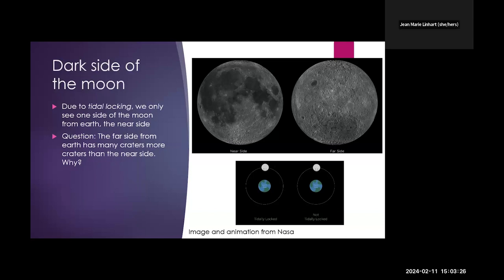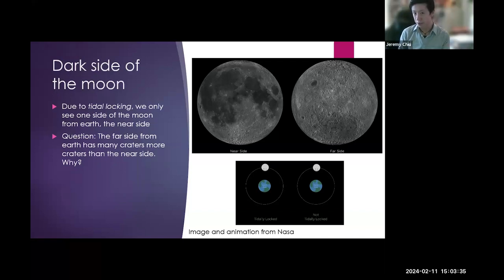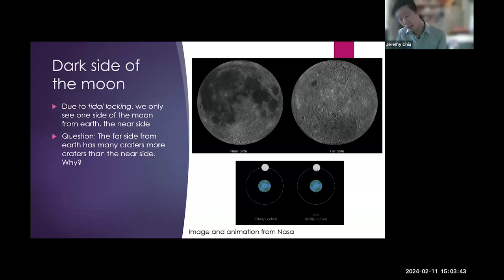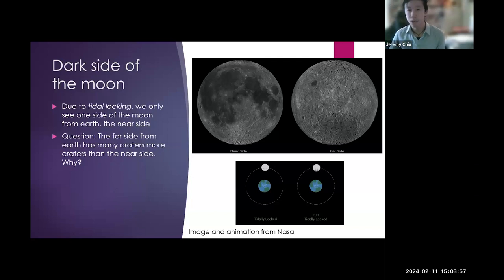Well, the earth would be protecting the moon on its side, so that would seem one possible reason. Yes, that's a very plausible hypothesis — that the side facing earth has earth acting like a shield. In science, are hypotheses necessarily true? Of course not; we would need to verify the hypothesis using an experiment. Can we realistically test this? Are we going to launch a bunch of asteroids at the moon? No, I don't think we should do that.